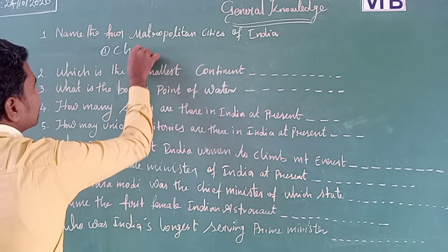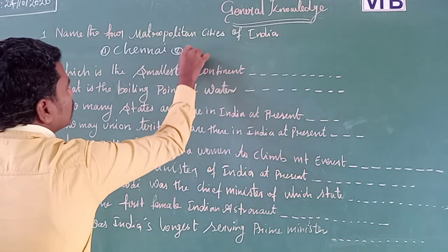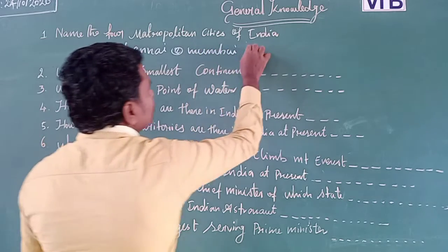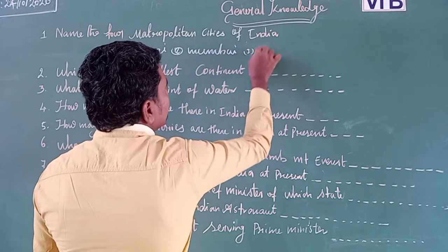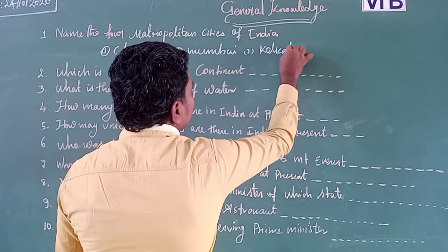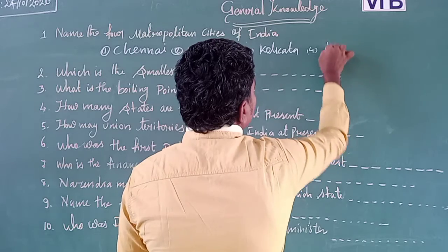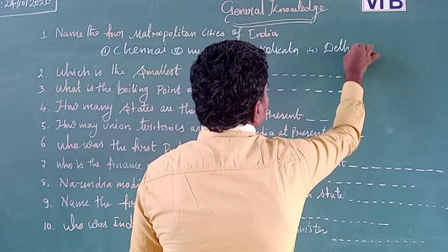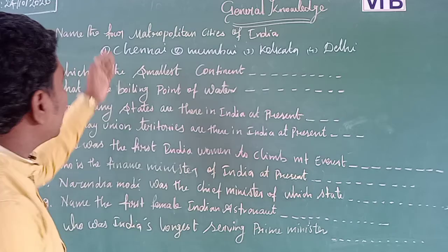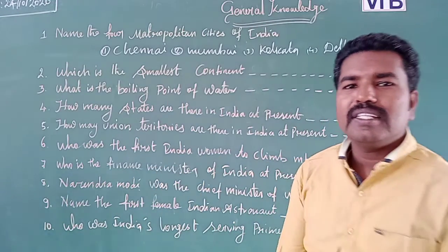The four metropolitan cities are: one, Chennai; two, Mumbai; three, Kolkata; and four, Delhi.